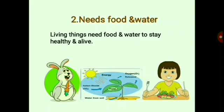Now let's come to the second characteristic: needs food and water. All living things, whether plants, animals, or human beings, need food and water for survival and to get energy so that we can grow and develop. In the case of plants, they make their own food through the process of photosynthesis, using water and sunlight, whereas animals and human beings depend upon plants and other living organisms for their food.